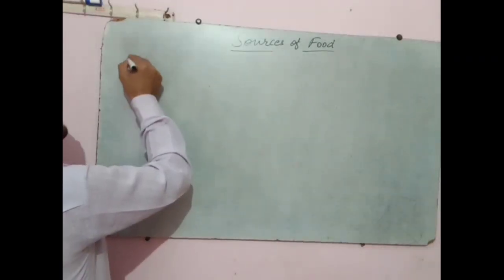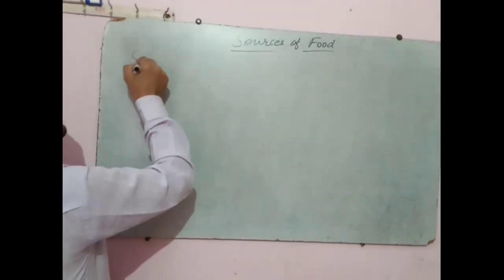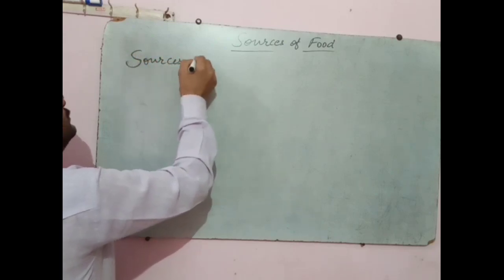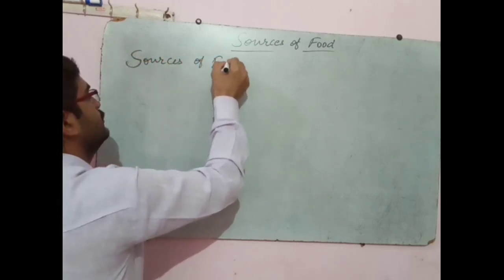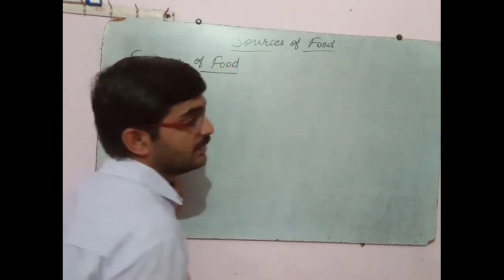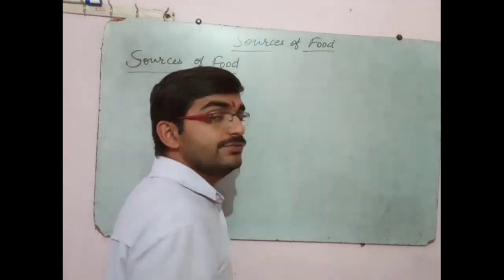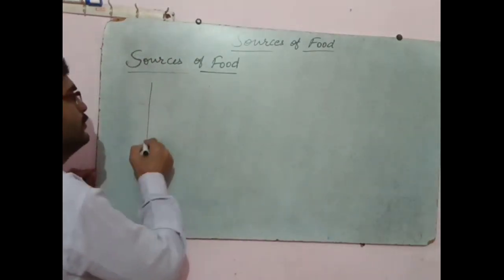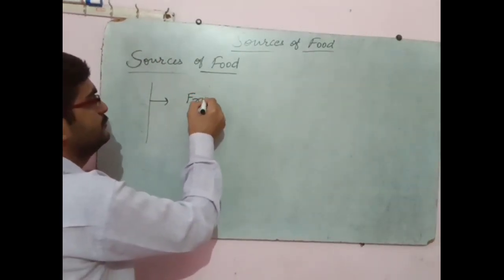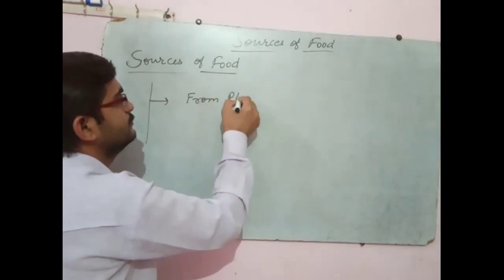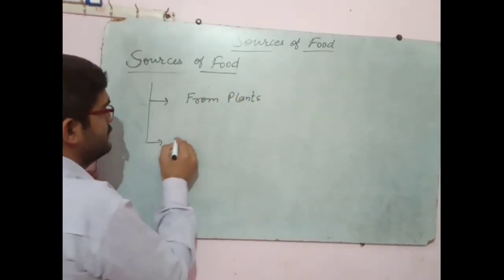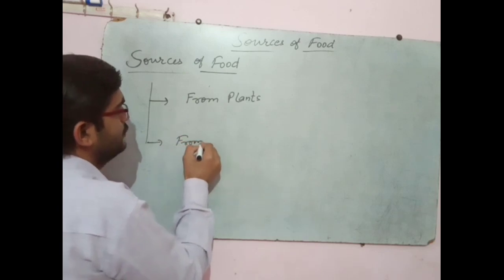Next is Sources of Food. From where do we get food? How do we get food? We get food from two types of sources. First is from plants. Second is from animals.